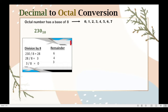So when we get 0 as the quotient, we are going to write the remainder in reverse order, meaning we are going to write the remainder starting from 3 up to 6. And this will be the equivalent octal number. So 230 to the base of 10 when converted into octal is equivalent to 346. This is converting decimal to octal using the repeated division by 8 method.